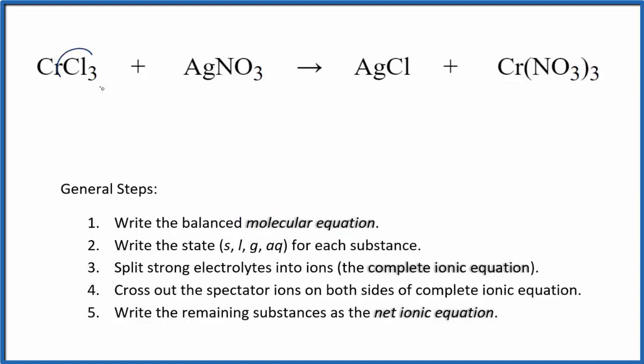I can see there are three chlorines here, but only one here. So I'm going to put a three in front of the AgCl. So now I have three chlorine atoms, those are balanced, but I need to put a three here to balance the silvers. That gives me three nitrates, but I have three nitrates over here, so that's good. And then I have a chromium on each side. That's the balanced molecular equation.